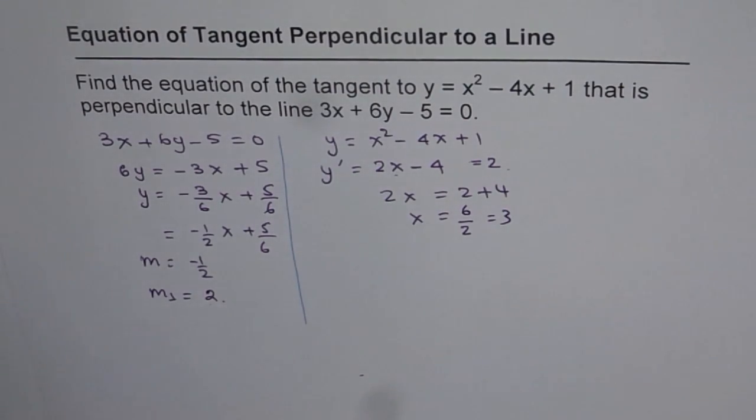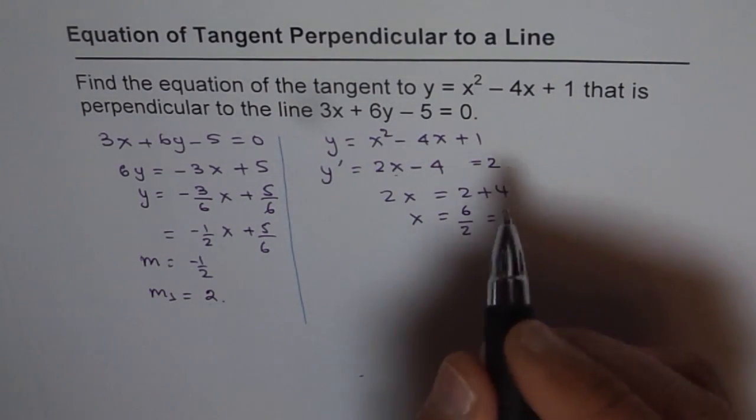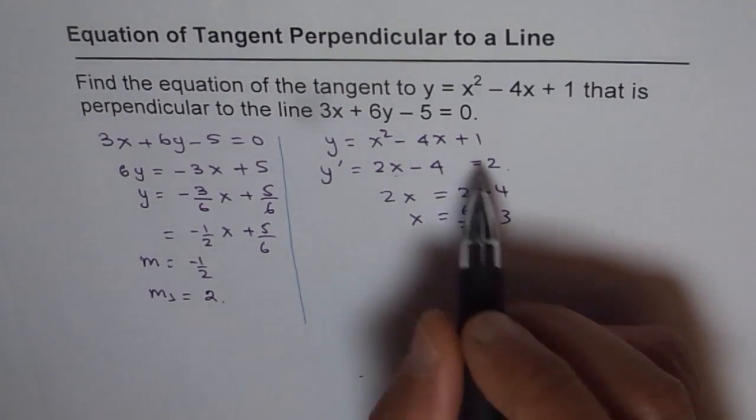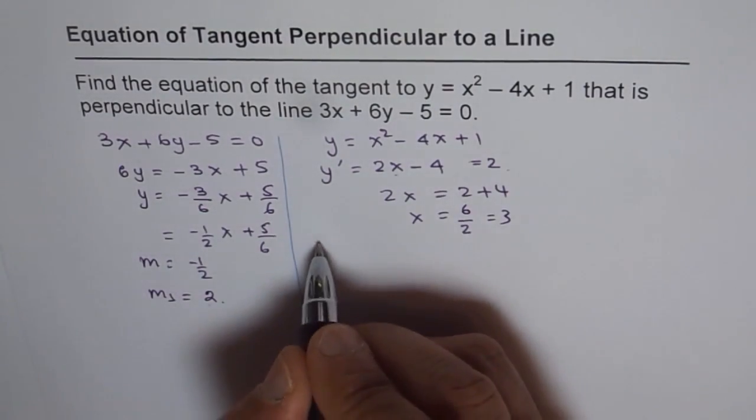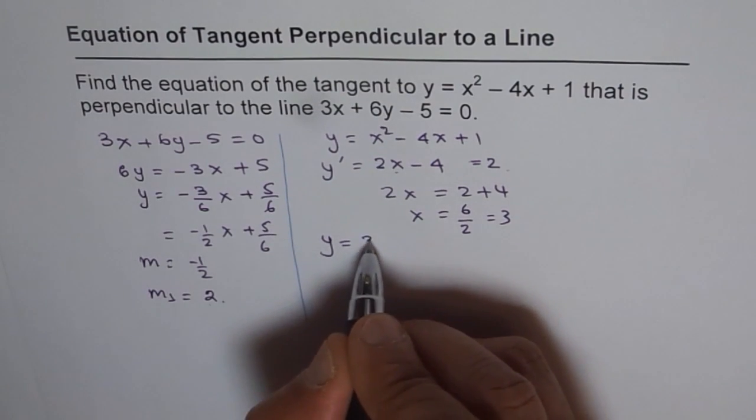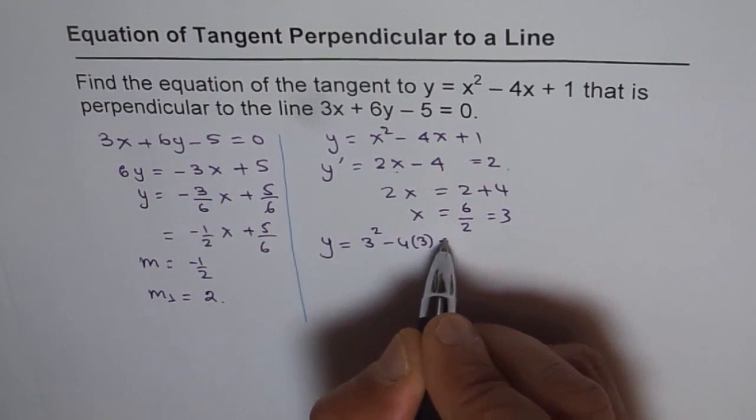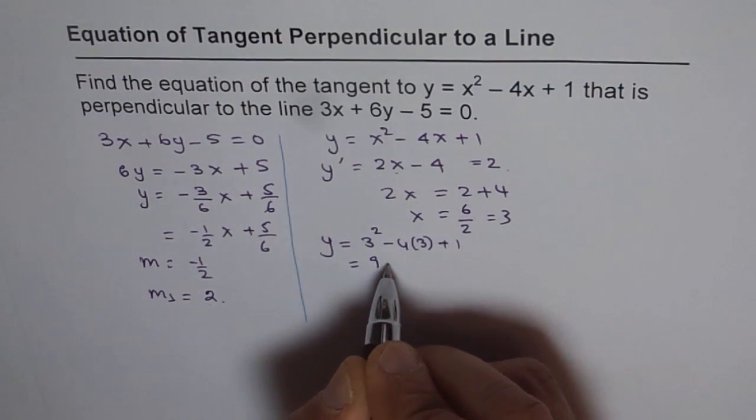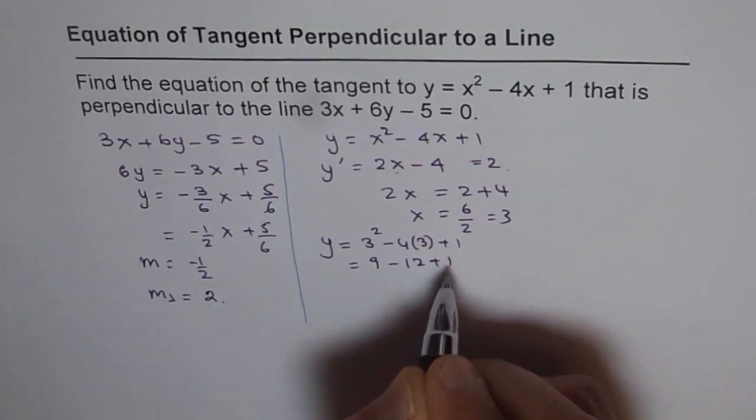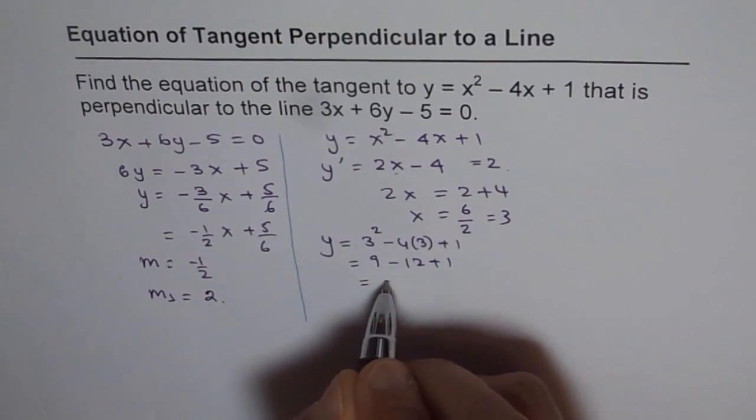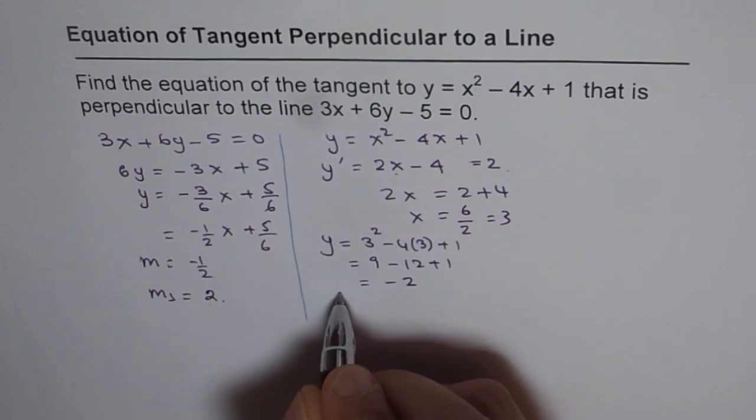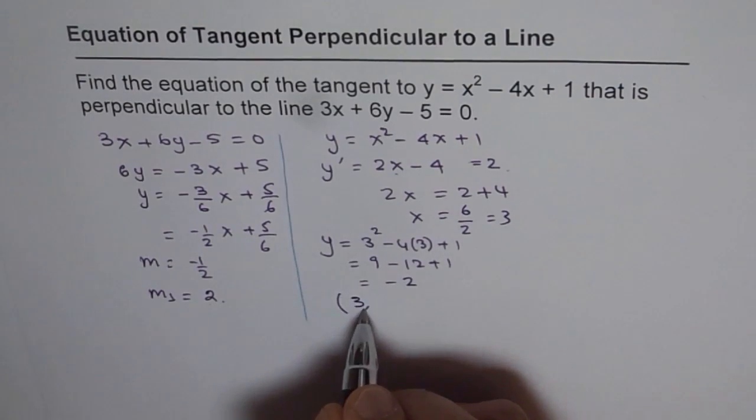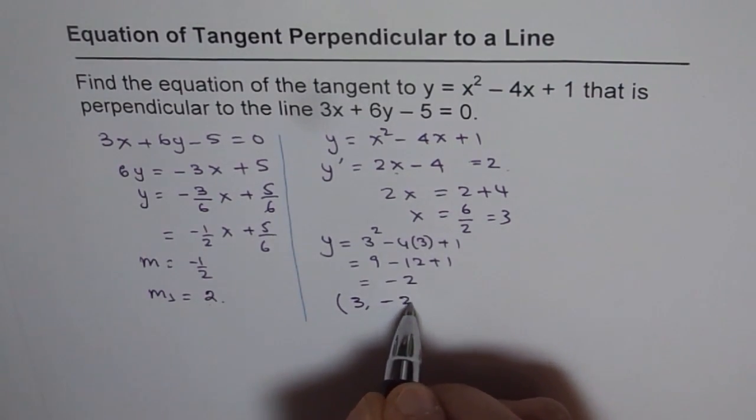So we know that the point has x value of 3. Now if x value is 3, what is the y coordinate? Let's figure that out. So y = 3² - 4(3) + 1, that gives us 9 - 12 + 1, that is 10 - 12 is -2. Therefore, the point is 3 for the x coordinate value and the y is -2.